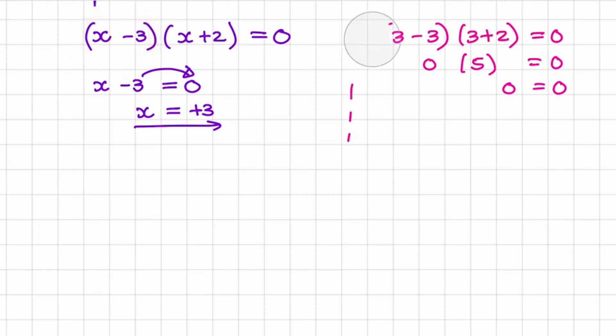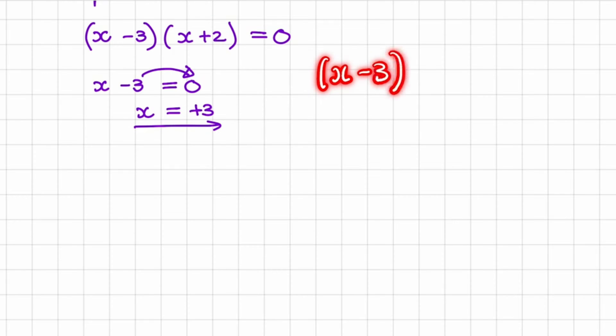But we also need to consider our result for the second bracket. So what value of x can I substitute in to make this whole bracket equal to 0? So we'll have (x - 3) multiplied to 0 equal to 0.